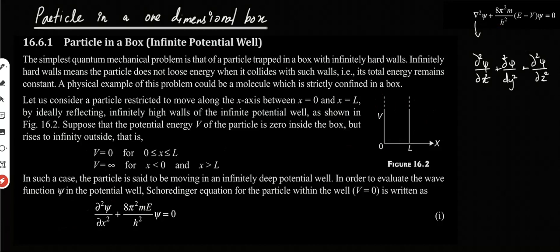Del squared psi is our Laplacian operator. The equation is: del squared psi plus 8π²m by h squared times E minus V times psi is equal to 0. We already said the potential energy V is 0 inside the box, so E minus V becomes just E.